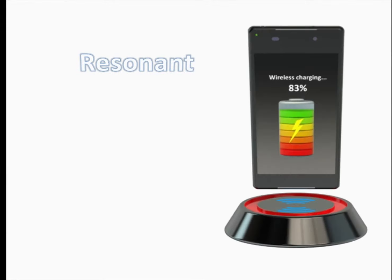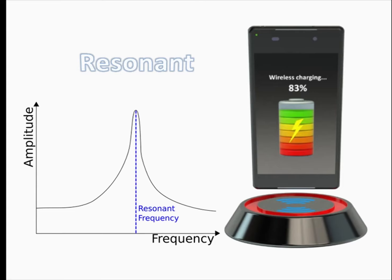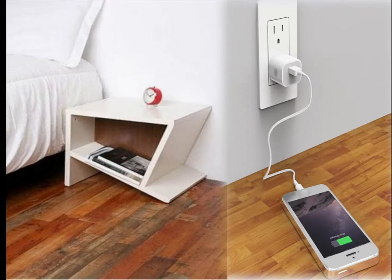In resonant, the advantage is that you can maintain a slight distance between the charger and the phone. The phone need not be placed at a particular angle on top of it. Resonant is similar to induction, here the frequency is tuned to get the maximum power transfer and this frequency is known as resonant frequency. The transmitter and receiver both operate in this frequency. Resonant is more convenient as you can place the device in any orientation but inductive is more efficient.